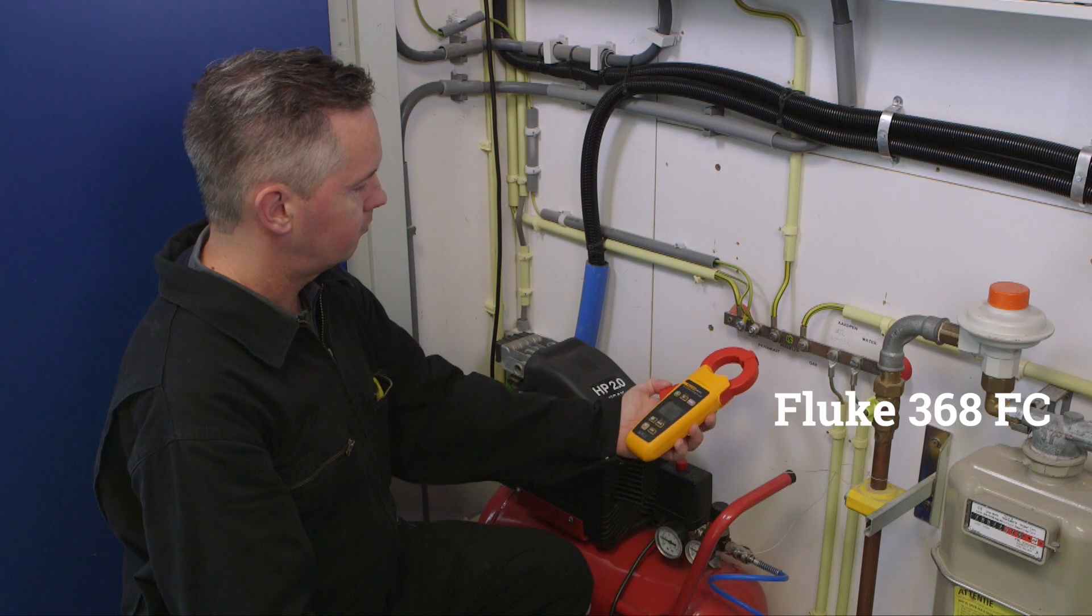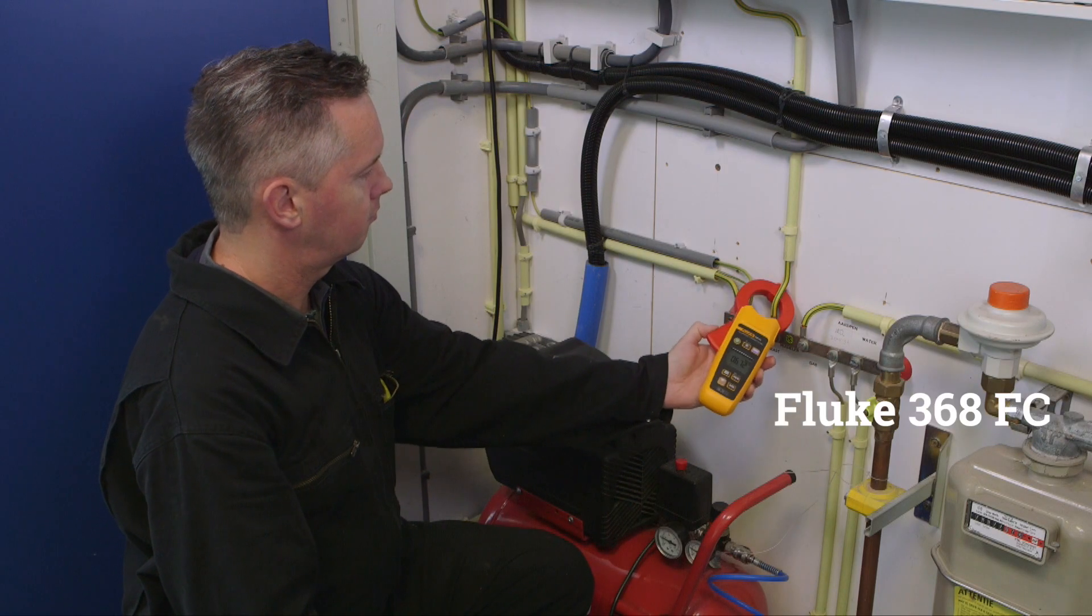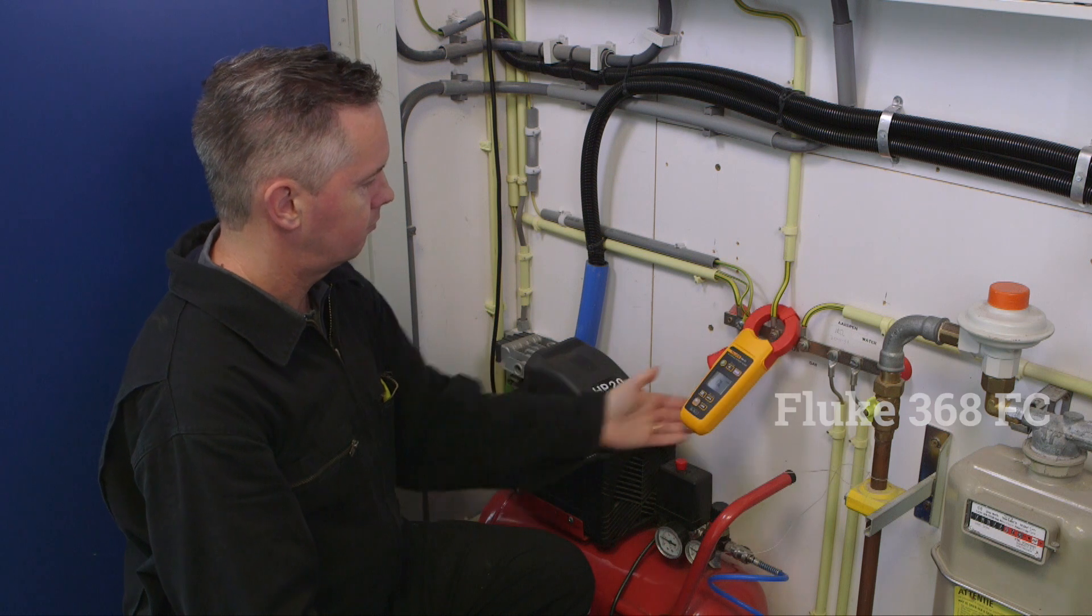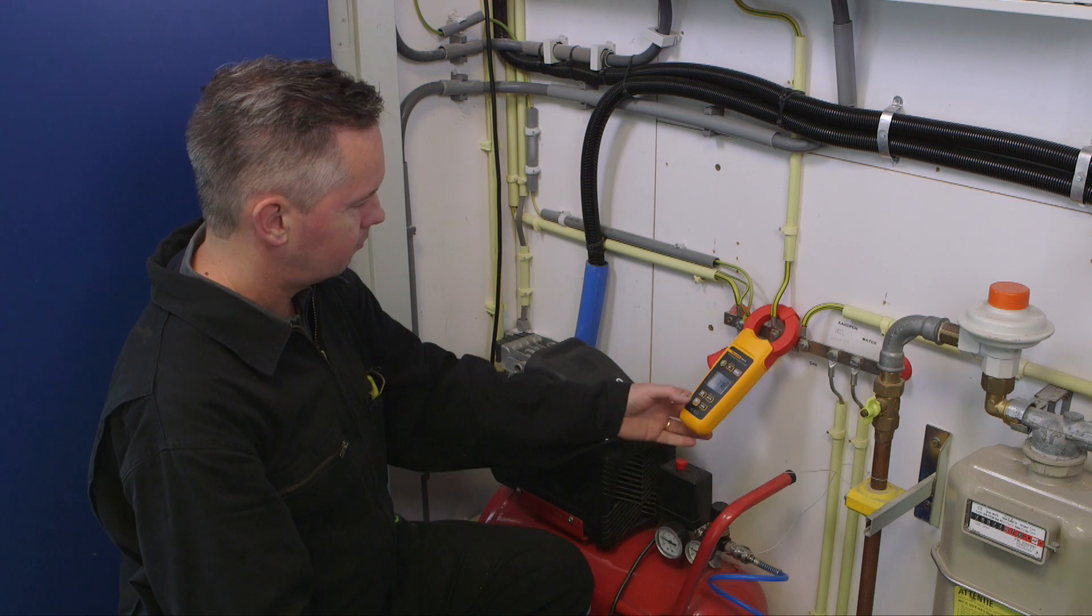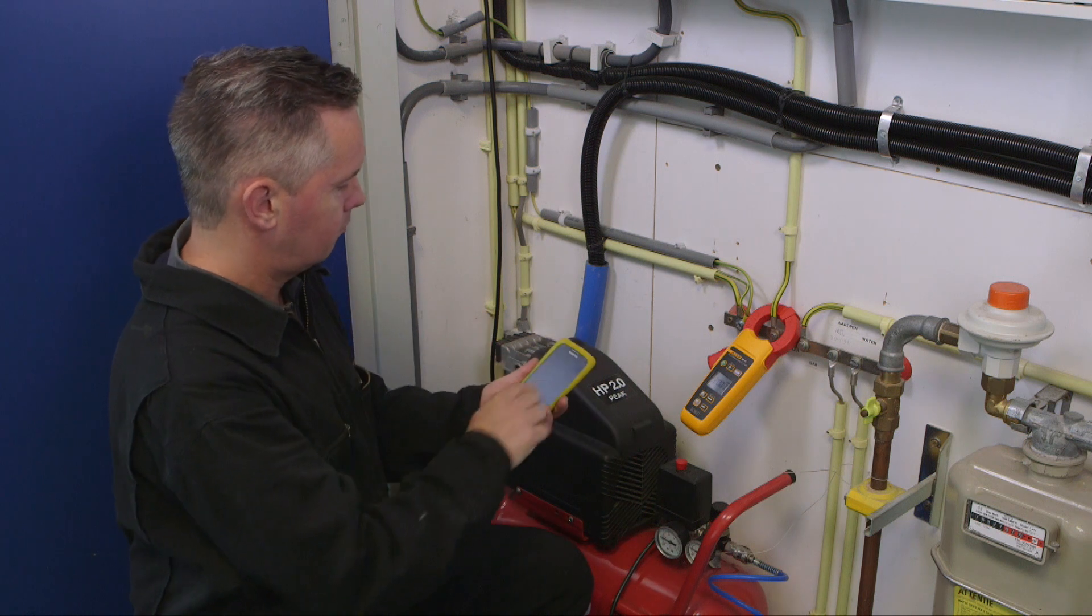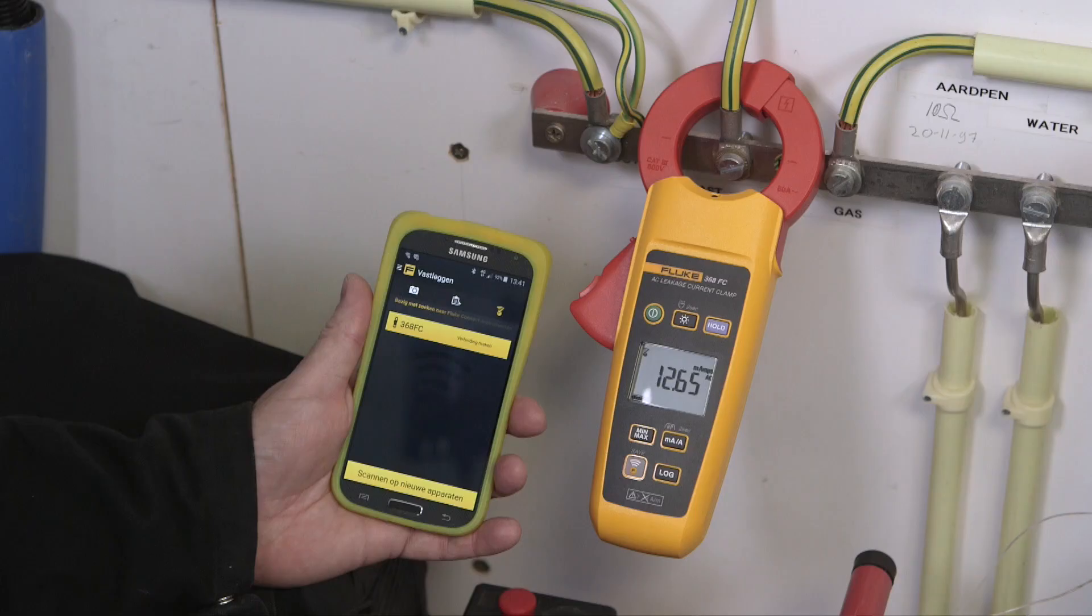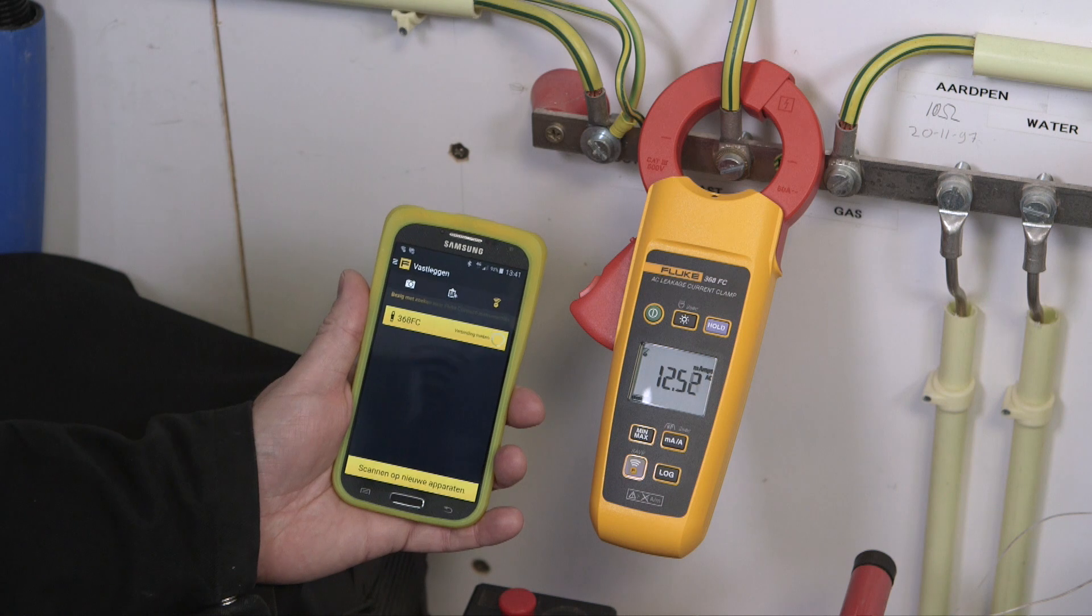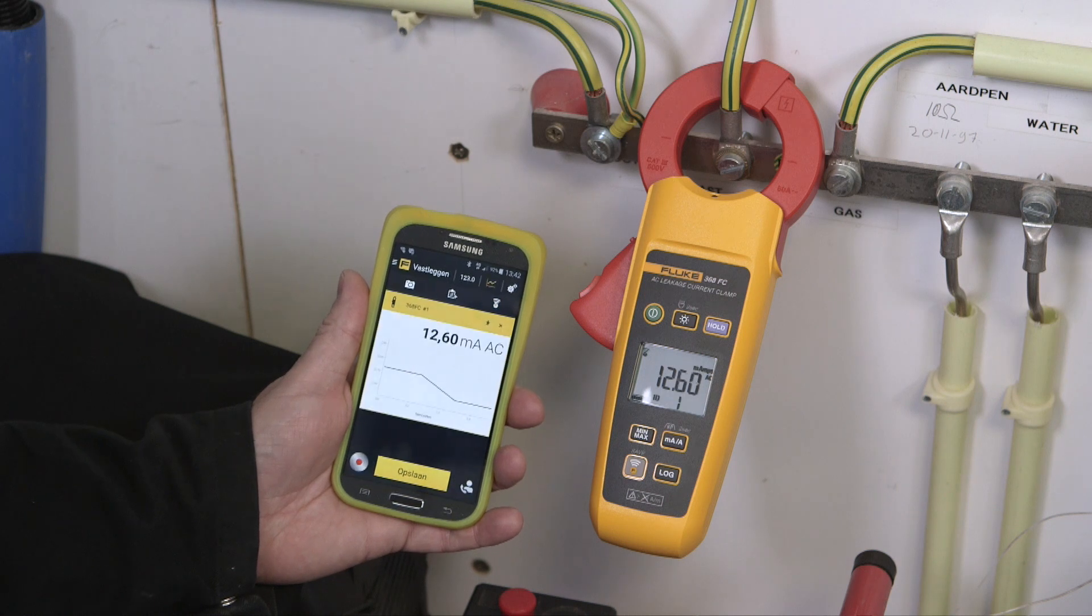The Fluke 368 FC leakage current clamp helps to detect leakage current, prevent unplanned downtime and identify intermittent GFCI and RCD trips, all without taking equipment offline. The Fluke 368 FC has a large 40 mm diameter jaw for work with large conductors.